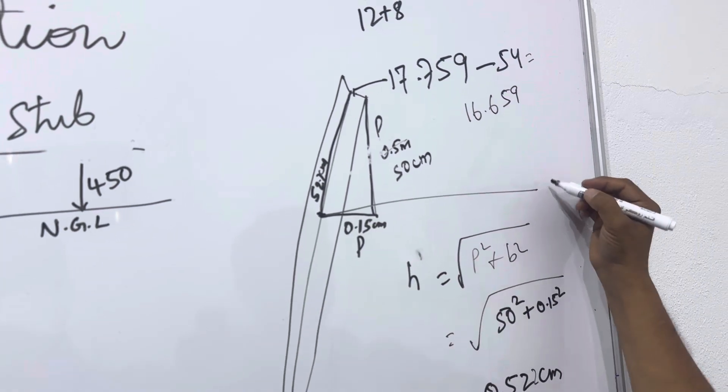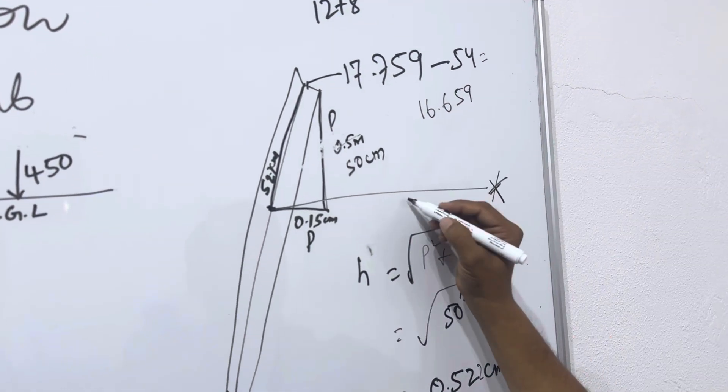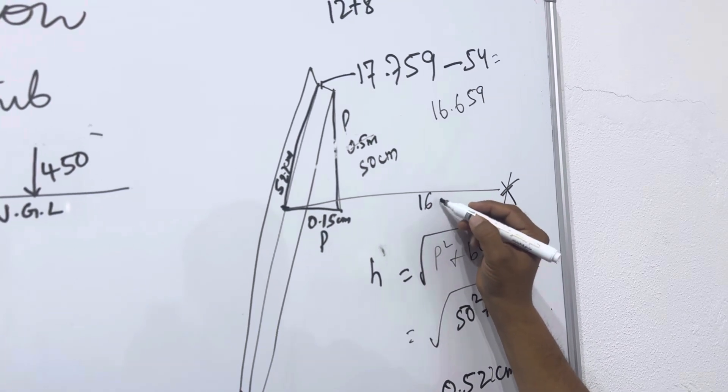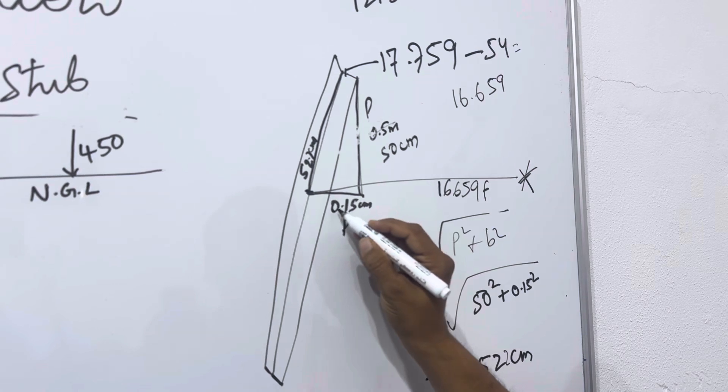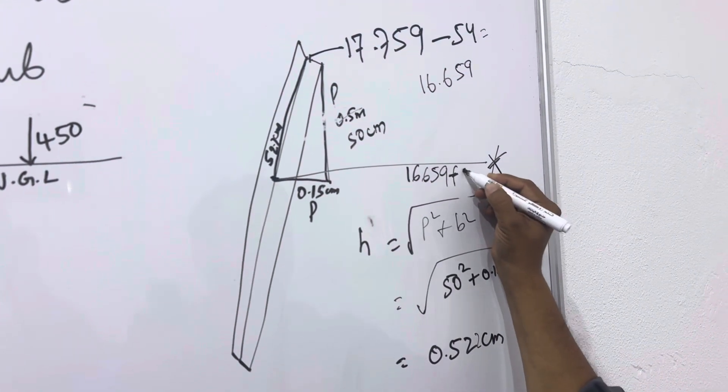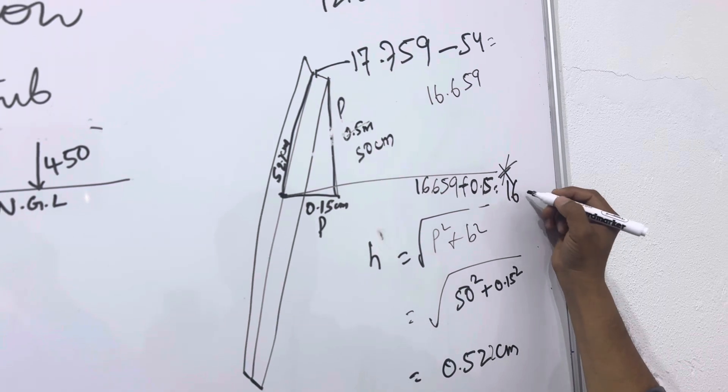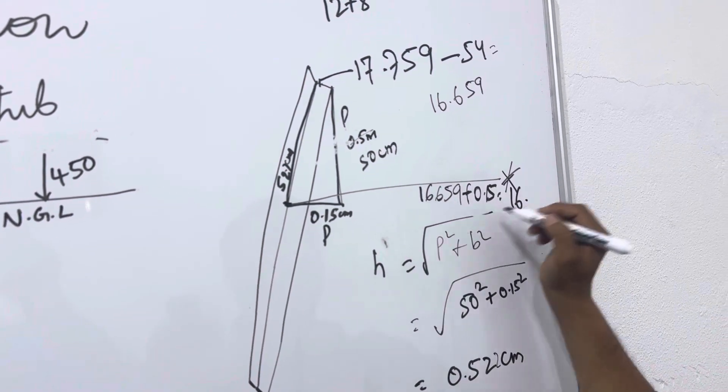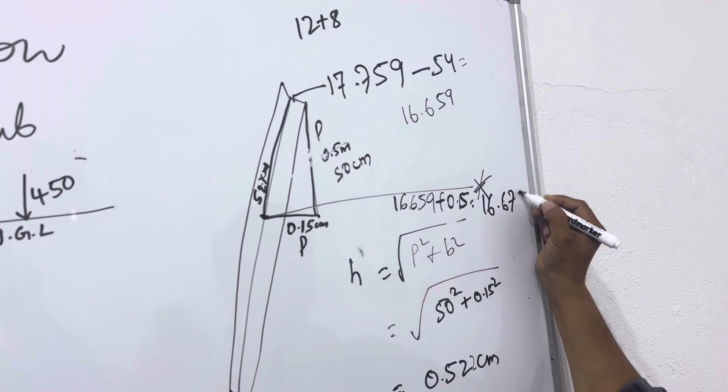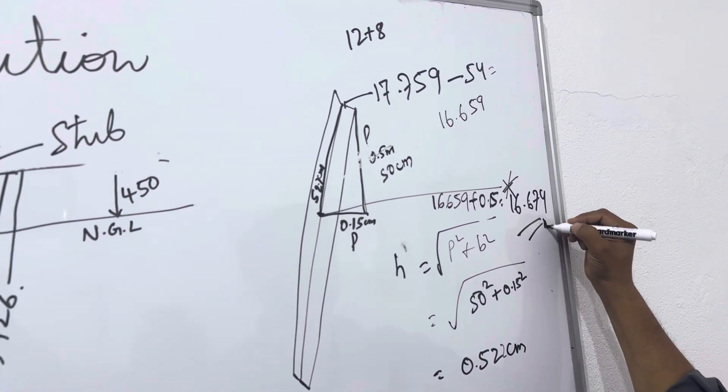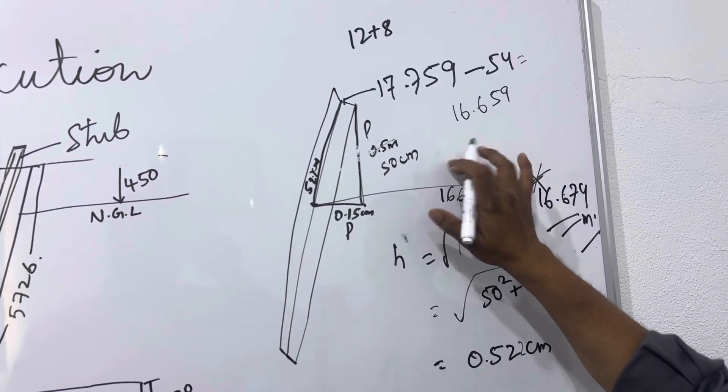So if with the inner face we will mark 52.2 centimeter, 52.2 centimeter here, and we will check with the total station. So it will come 16.659 plus we will add this one, zero point base, it will go to 16.659 plus we will add this one, zero point base, it will go to 16.674. This is meter, this is the final for the checking of the slope of the system.